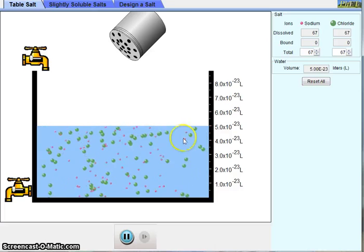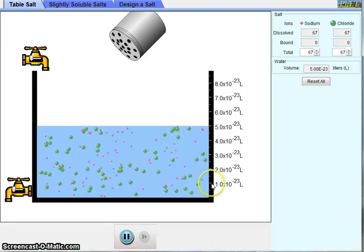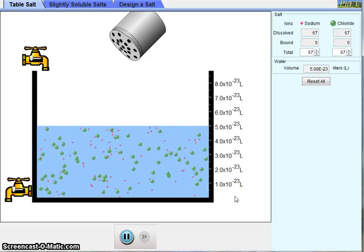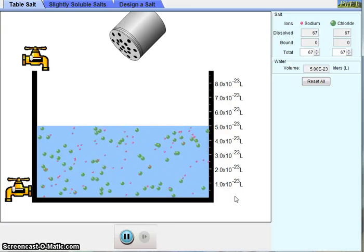Now, each of these individual ions that we see moving around in the water would be surrounded by what we call a shell of hydration. This is where water molecules are going to be surrounding either the chloride ion or the sodium ion.